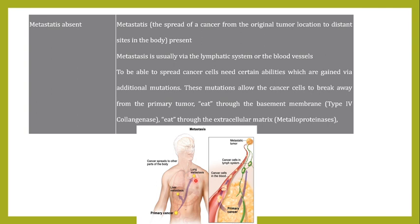Once cells detach from the basement membrane via type 4 collagenase, they must also pass through the extracellular matrix. To overcome this barrier, malignant cells produce metalloproteinases, which can degrade the extracellular matrix, allowing cancer cells to move from the primary site to distant parts of the body. Benign tumors lack this ability and remain at their site of origin.